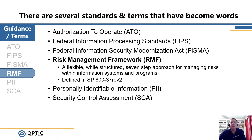Next we have RMF, or the Risk Management Framework itself. The RMF is a flexible seven-step process that helps us define what security controls need to be implemented, implement those controls, assess the associated risk, and define the requirements for continuing to operate a system securely. More information is available on the RMF video or as defined in SP 800-37 Rev 2.